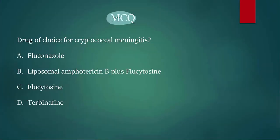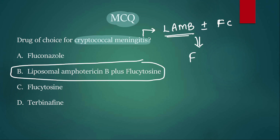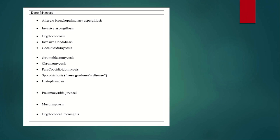Third question: drug of choice for cryptococcal meningitis. Cryptococcus is a fungus causing meningitis — it's an emergency. Options: option A fluconazole; option B liposomal amphotericin B with flucytosine; option C flucytosine; option D terbinafine. If your answer is B, you are absolutely correct. The drug of choice for cryptococcal meningitis is liposomal amphotericin B (LAmB), plus or minus flucytosine. Once the patient is stabilized, we switch to oral fluconazole; in emergency, it is liposomal amphotericin B.